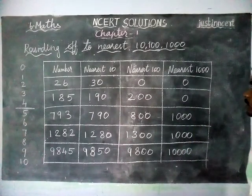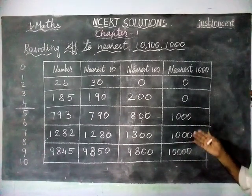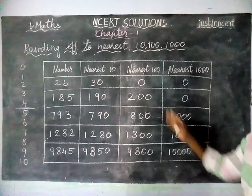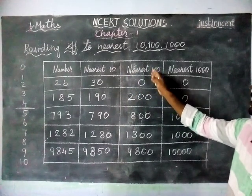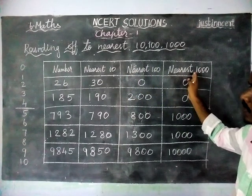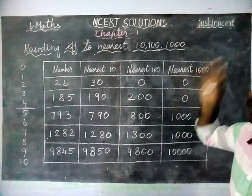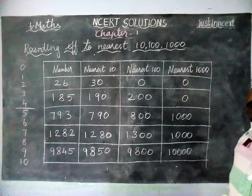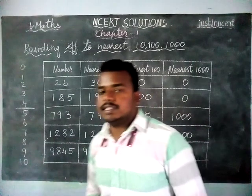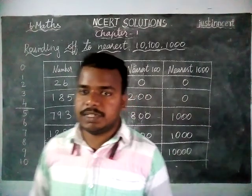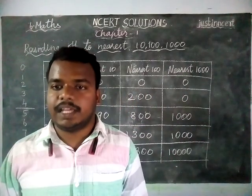So this is the method to convert numbers to nearest 10, 100 and 1000. If you have any doubts, kindly give your suggestions in the comments box. Thank you.